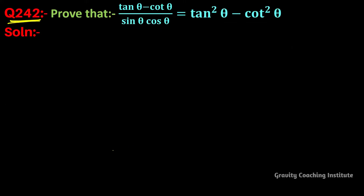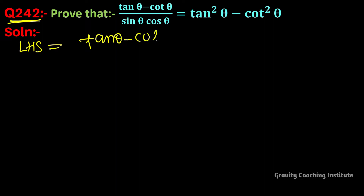Question number 242: prove that (tan θ - cot θ) upon (sin θ · cos θ) equals tan²θ minus cot²θ. This will be an LHS to RHS proof. Starting with (tan θ - cot θ) upon (sin θ · cos θ).